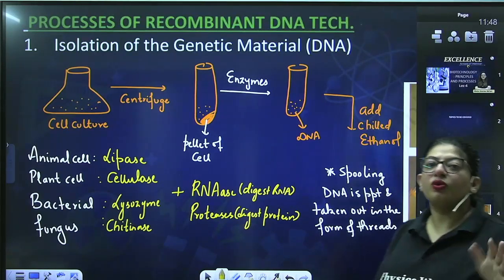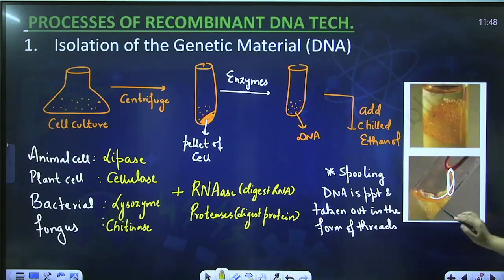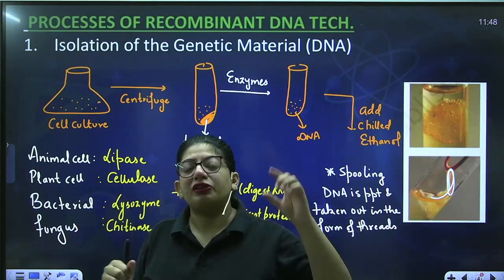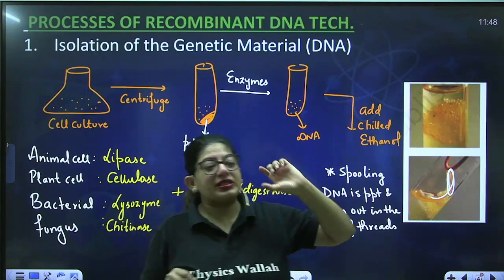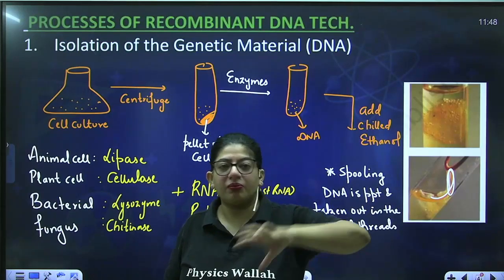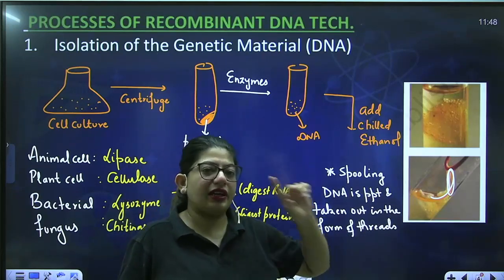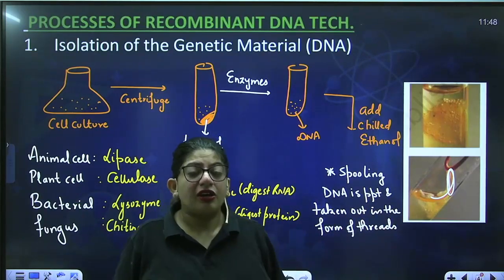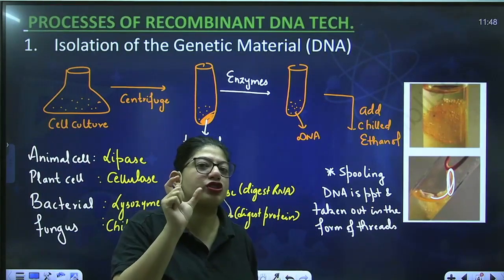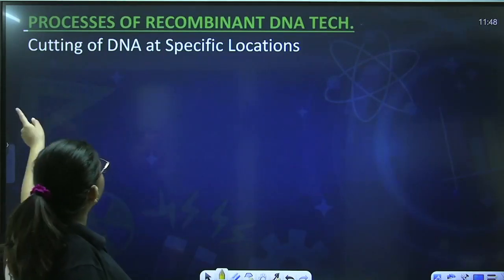By this step you have taken the actual DNA out from a cell. For example, if you want the gene that produces insulin in humans, you will take the animal cell, break it, and take the DNA out. Now this DNA includes both the vector DNA and the desired gene. From that big DNA you want your foreign DNA — the insulin-secreting gene — to come out.